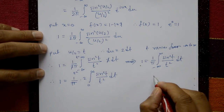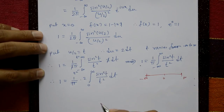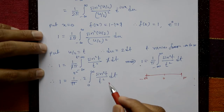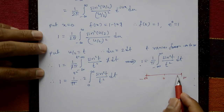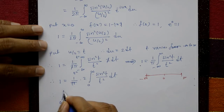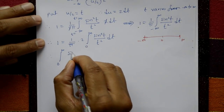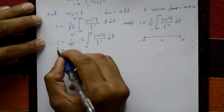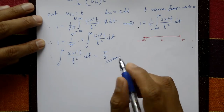Since sin²t/t² is an even function, the integral from minus infinity to plus infinity equals 2 times the integral from 0 to infinity. So 1 = 1/π times 2 times integral from 0 to infinity of sin²t/t² dt. Therefore the integral from 0 to infinity of sin²t by t² with respect to t equals π/2. This is the required answer.